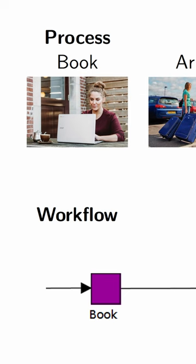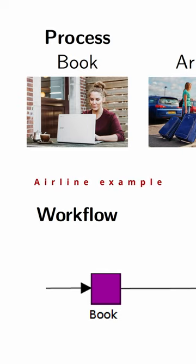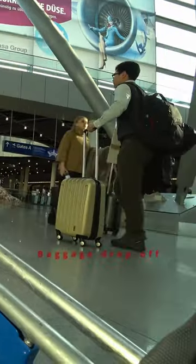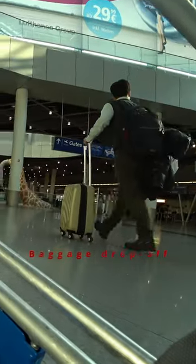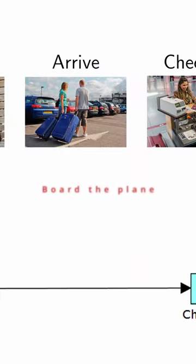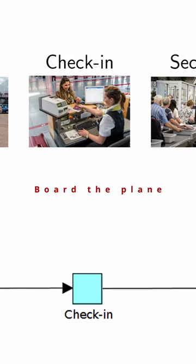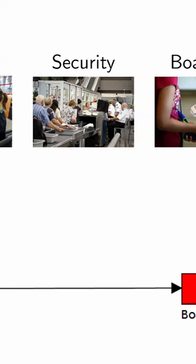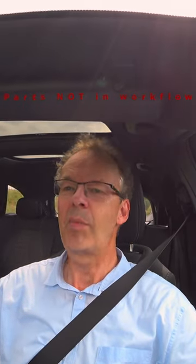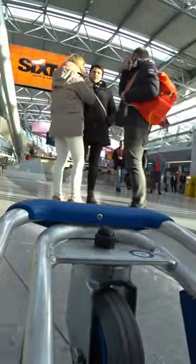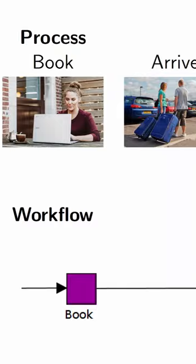To make that clearer, let's take the example of an airline. The passenger goes to his computer and books a ticket, then goes with the car to the airport, goes to the baggage drop-off, and afterwards goes through security and finally boards the plane. When you book your ticket, you do that with an IT system of the airline. All the parts of going to the airport, parking your car, getting your luggage — this is all part of the business process, but it's not part of the workflow.